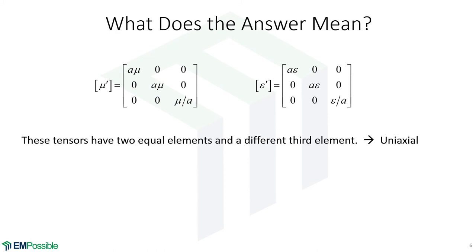Whenever that happens, we call this uniaxial. Even more, we see that this third direction has a lower value than these other two directions, assuming a is greater than one. So in fact, this would be a negative uniaxial medium that would realize this space stretching.